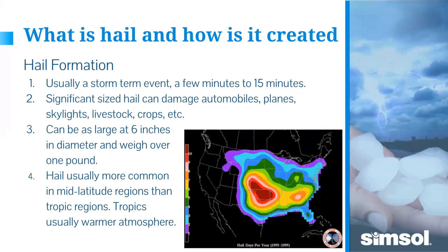A hail event typically lasts a few minutes, maybe 15 minutes at most. Significant hail — three quarters of an inch and up — can damage automobiles, planes, skylights, livestock, and crops. I've seen fields of corn flattened and dead cows caught in hailstorms. Hail can reach six inches in diameter and weigh over a pound. It's more common in mid-latitude regions because the tropics are typically too warm to generate high cloud tops.